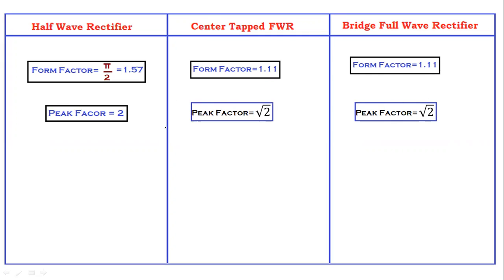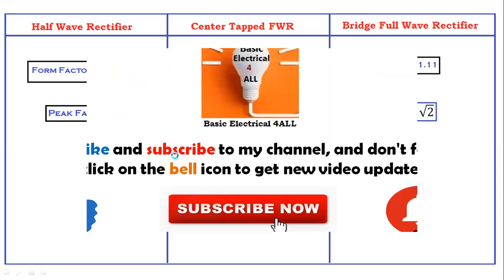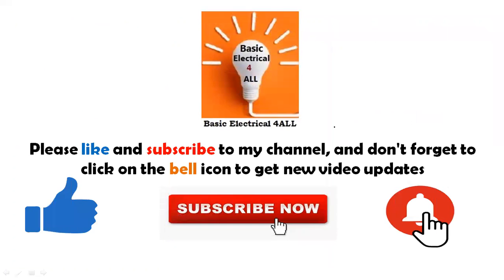If you observe all the differences, except for the peak inverse voltage, the center tapped full wave rectifier and the bridge full wave rectifier have the same values for all parameters. These are the differences between the half wave rectifier, the center tapped full wave rectifier, and the bridge rectifier.